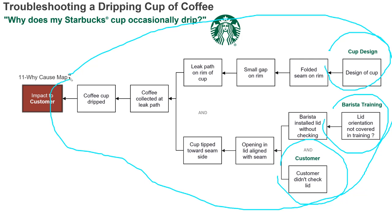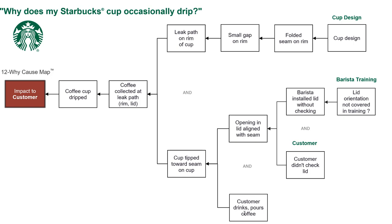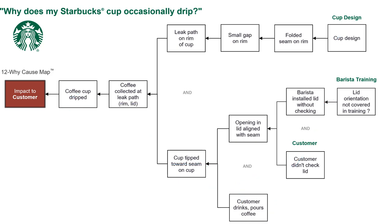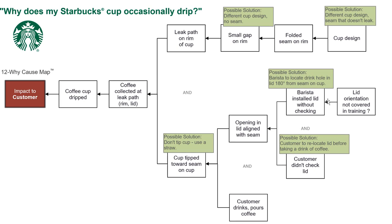You lay an incident out — that's the analysis — and explain the cause-and-effect relationships. Once you know these different causes, it gives you options for solutions. Some people will be fixated that this is a design issue that must be changed, and that is one option. Another solution is to train baristas to rotate the lid 180 degrees from the seam. You could even put a public service announcement at the condiment station telling customers to make sure the lid is back on correctly after adding cream or sugar.